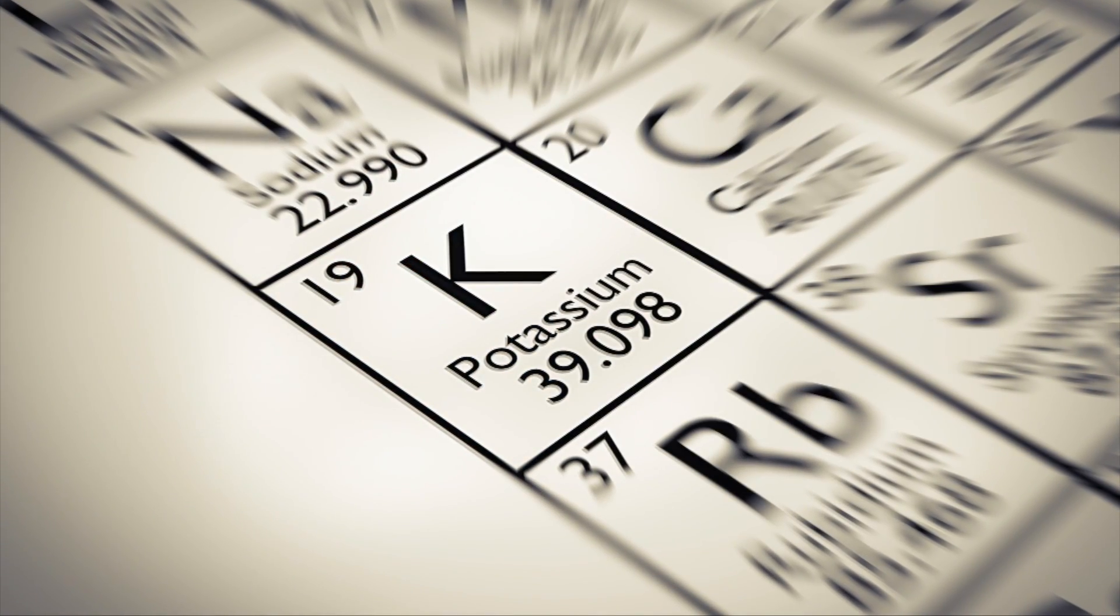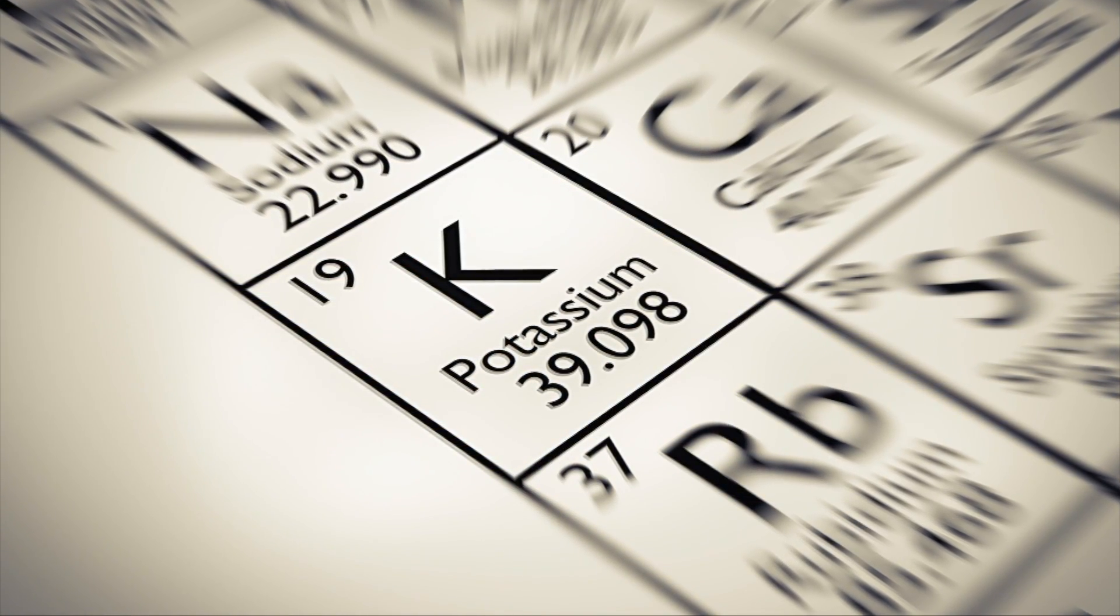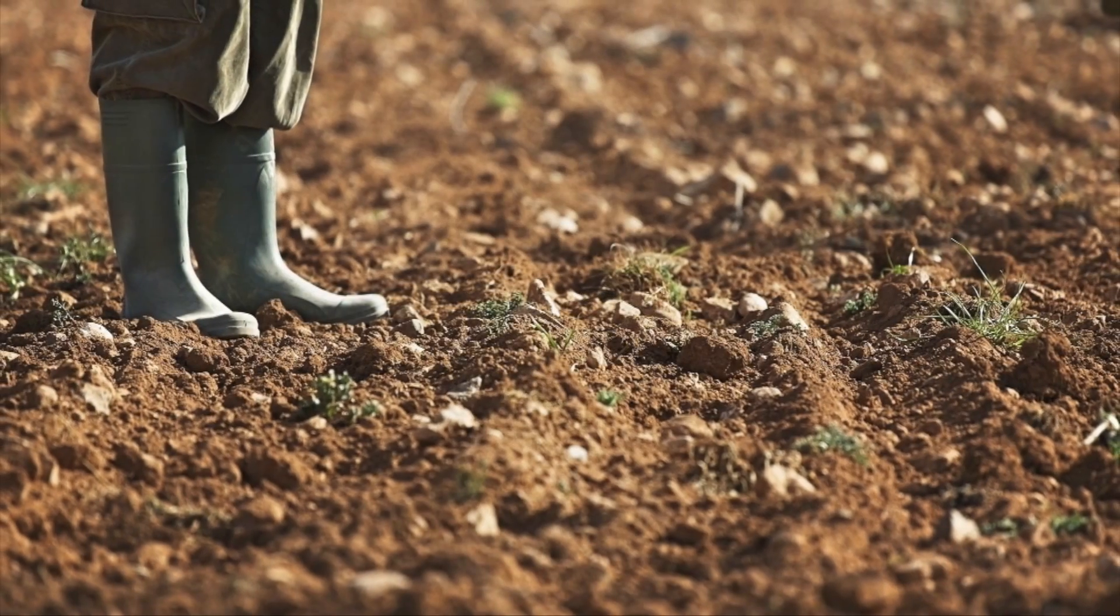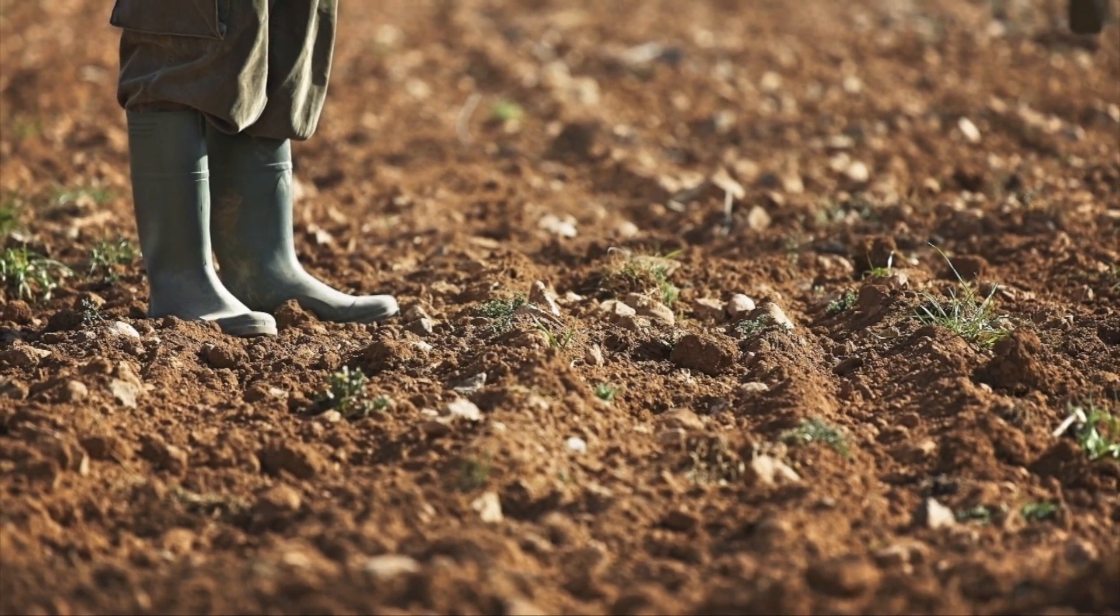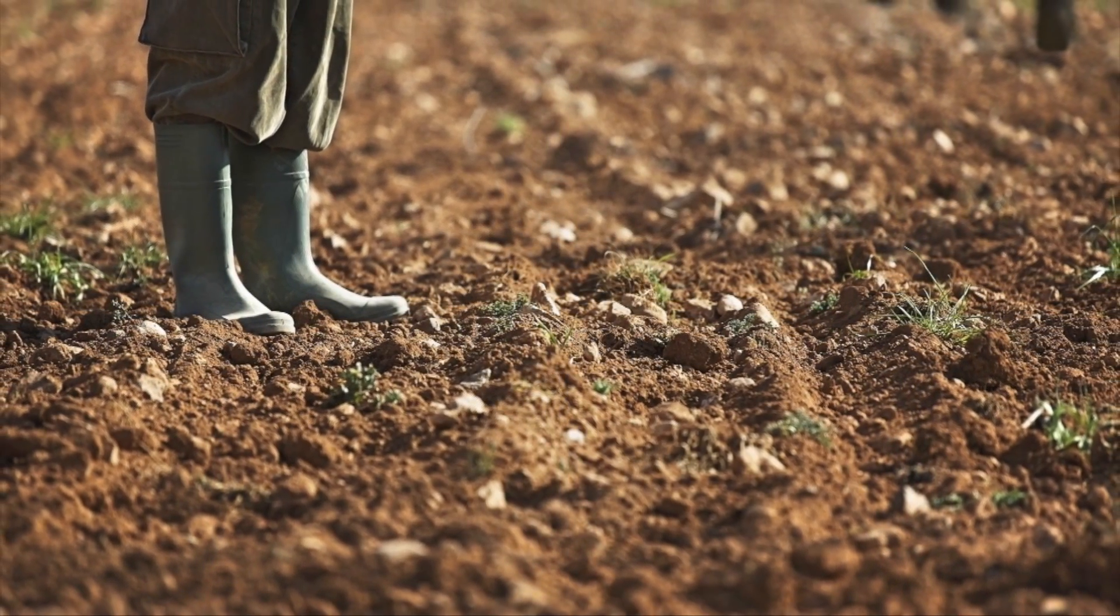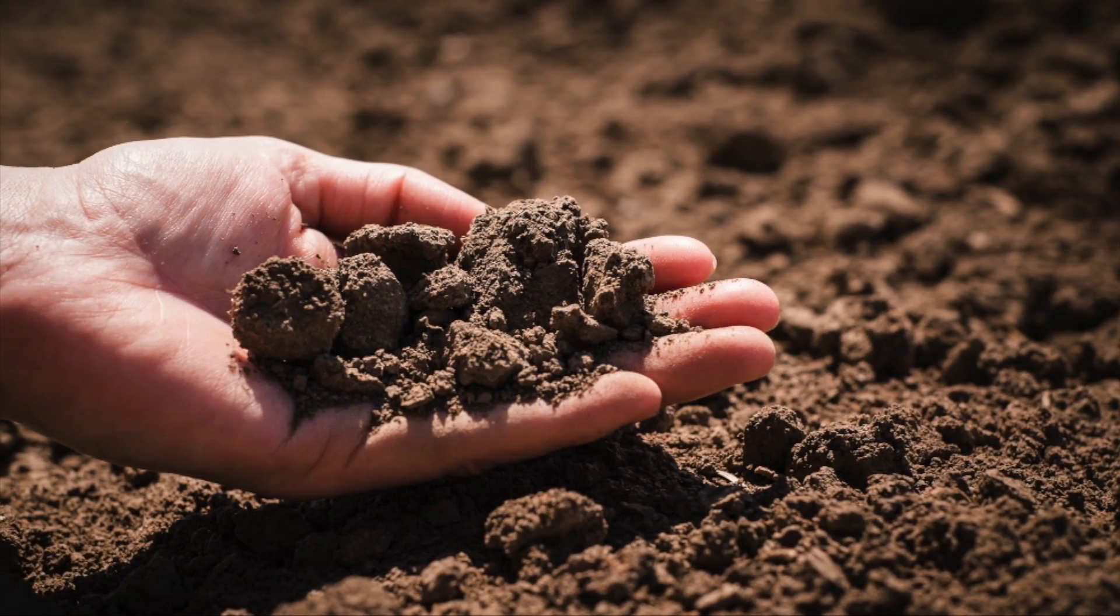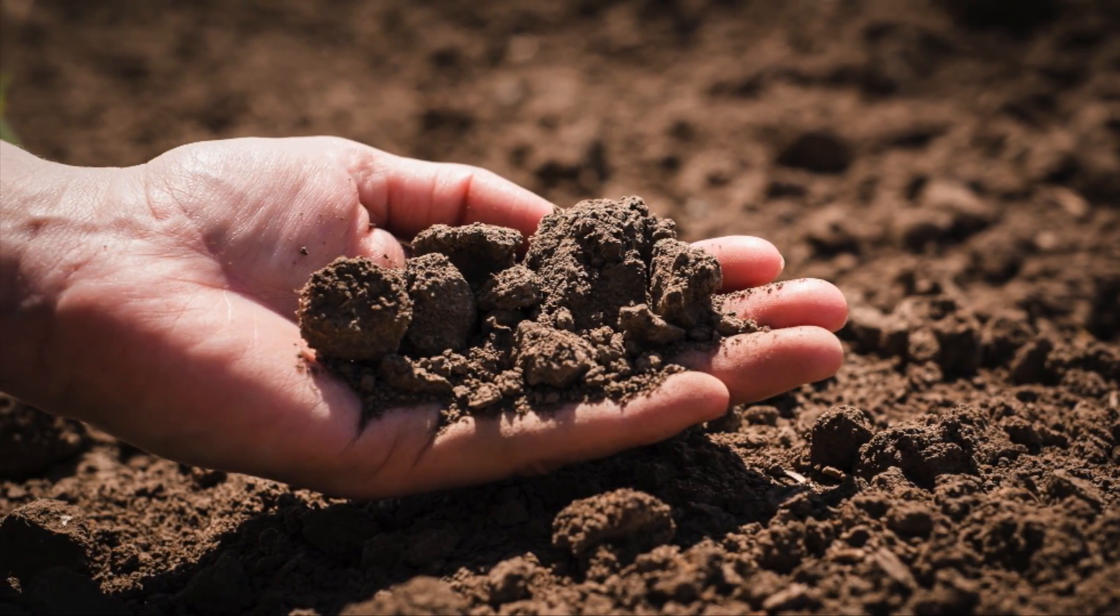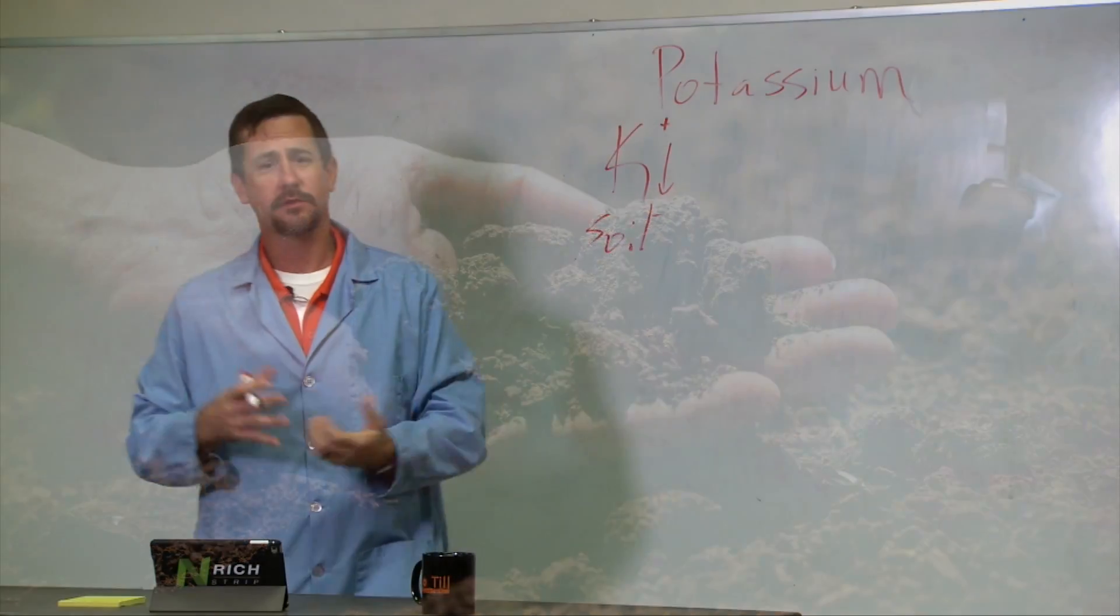K is a positive cation that's bound to the soil. The soil is negatively charged and so those opposite charges attract. It's also immobile in most of our soils.